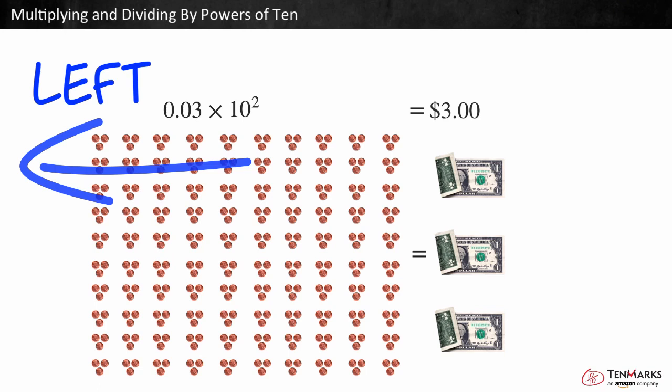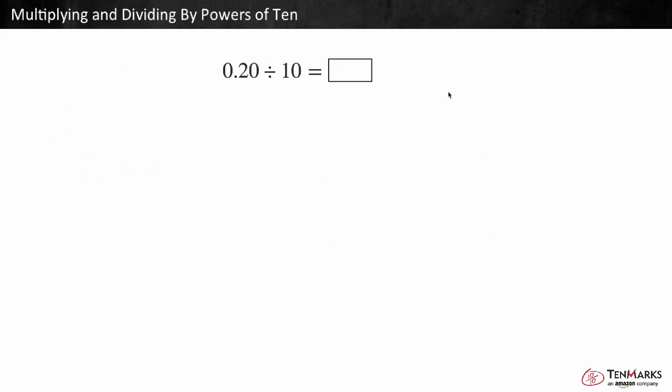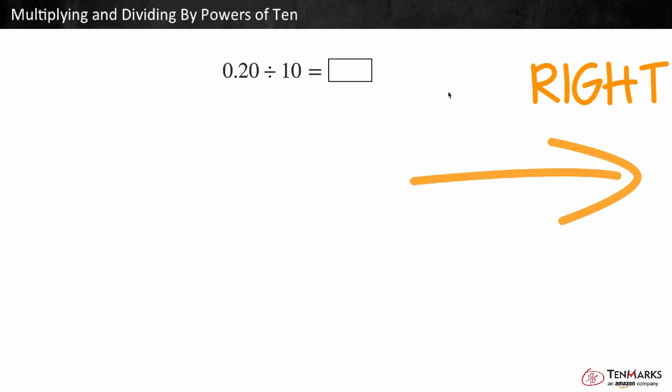You'll see a pattern when a number is multiplied by a power of 10: each digit shifts the same number of places to the left as the number of 10s it was multiplied by. When dividing by powers of 10, we shift the digits to the right instead of the left.